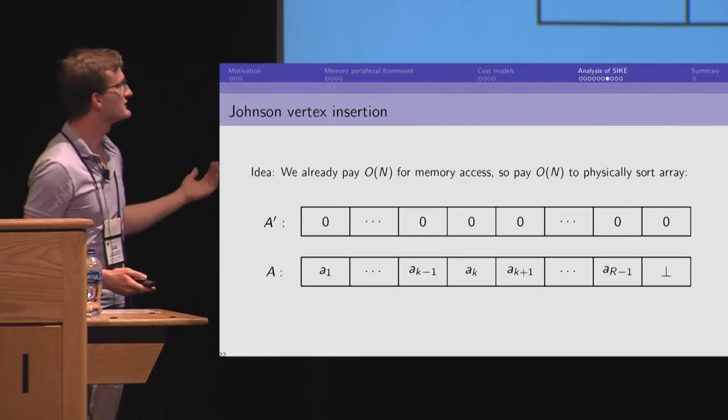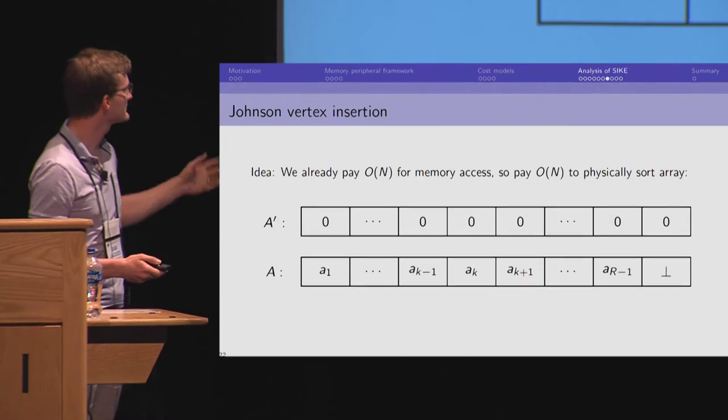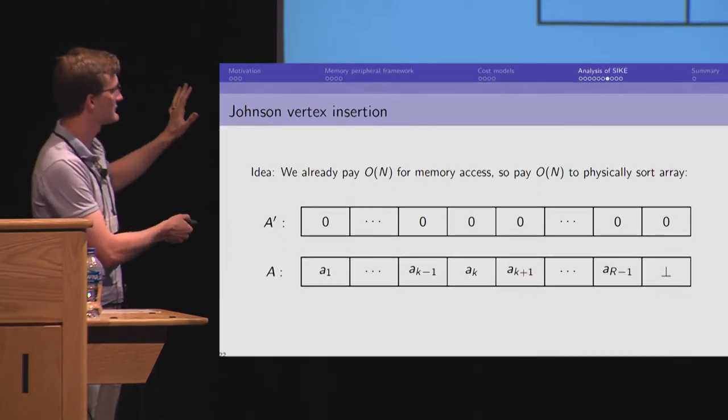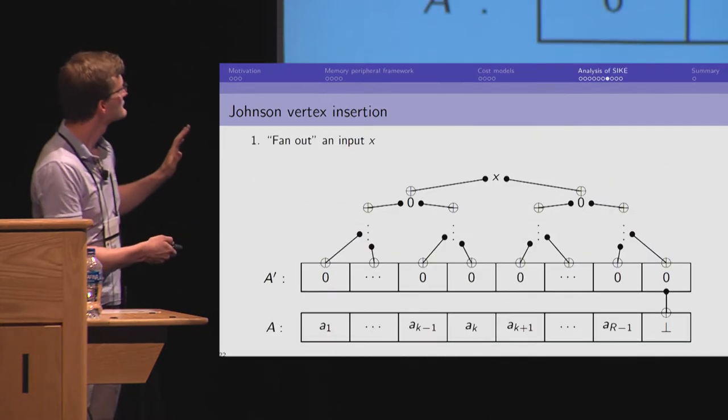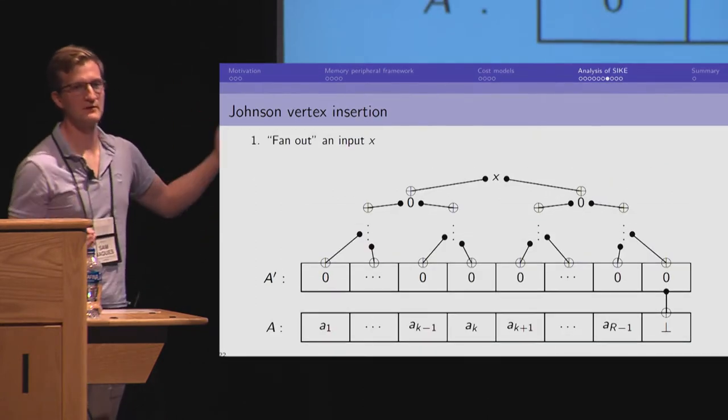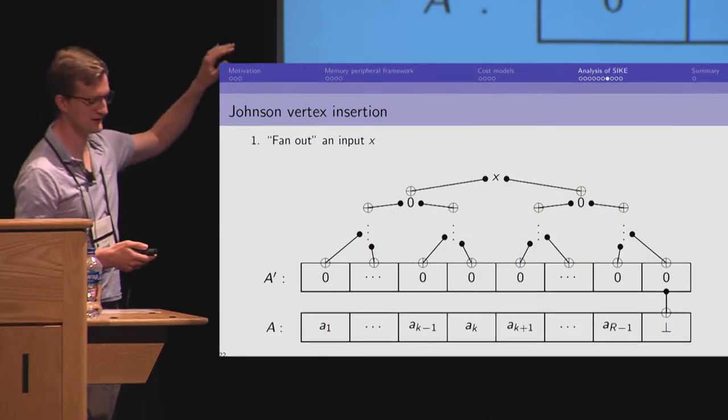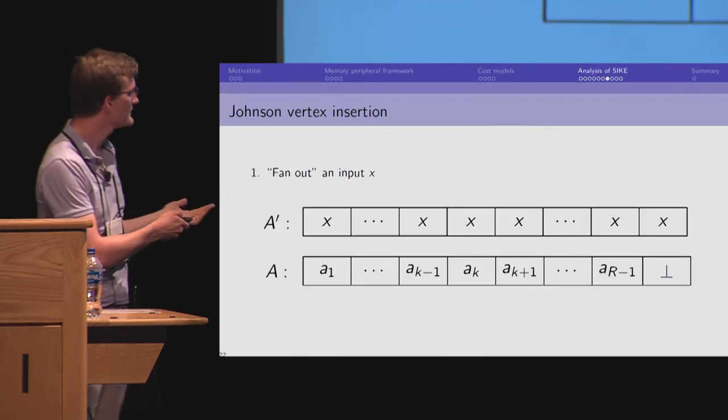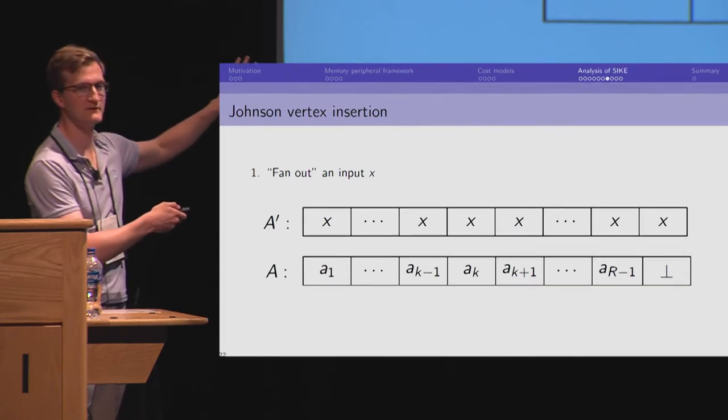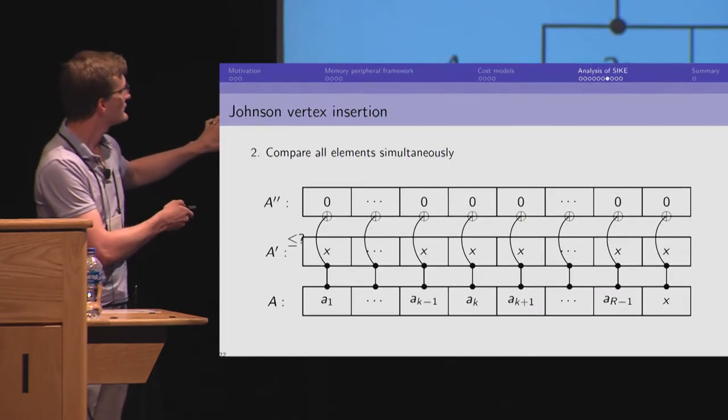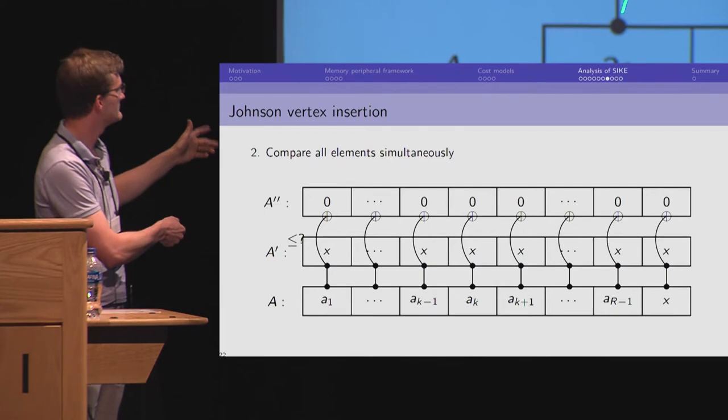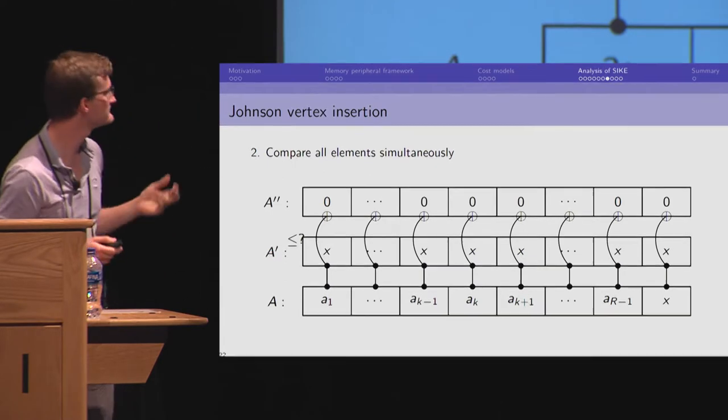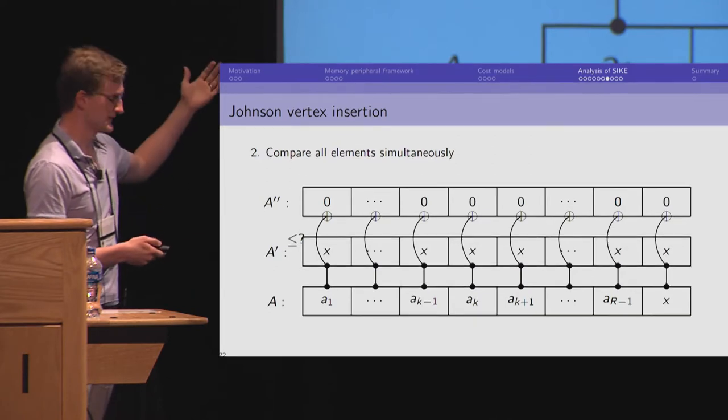And so, to insert into this, I'll walk through what this looks like. We've got all these elements in the bottom here. And we also have an ancilla array of all zeros. So, the first thing we do is we fan out the input x. We use this tree to copy x to every element. This has logarithmic depth, linear number of gates. We end up with x in every element. And we compare all the elements simultaneously with the one above them to see if the element is larger than x.